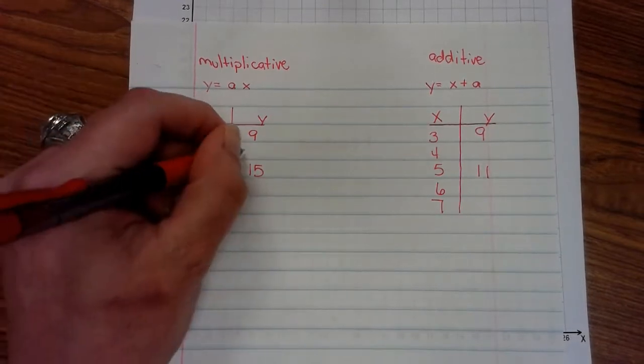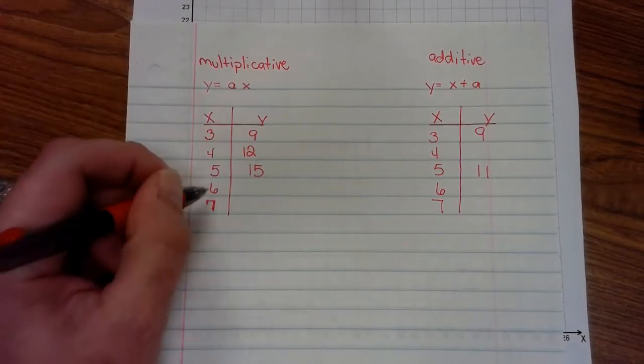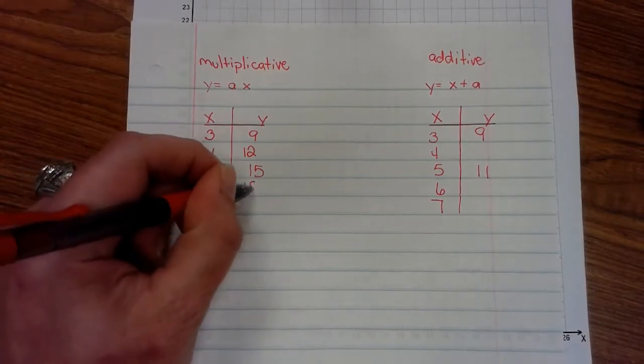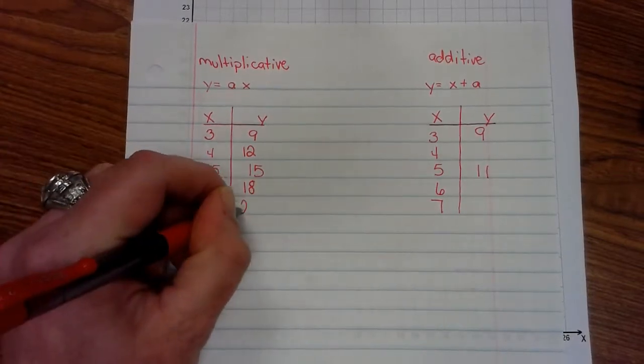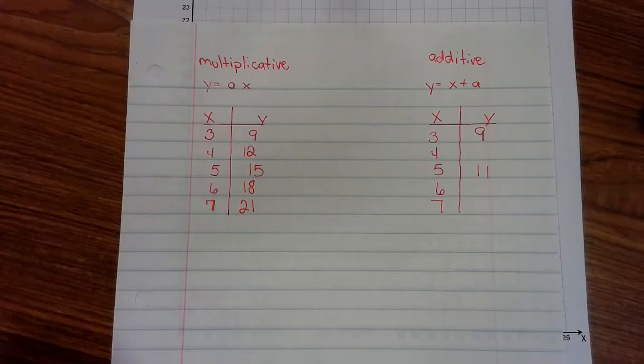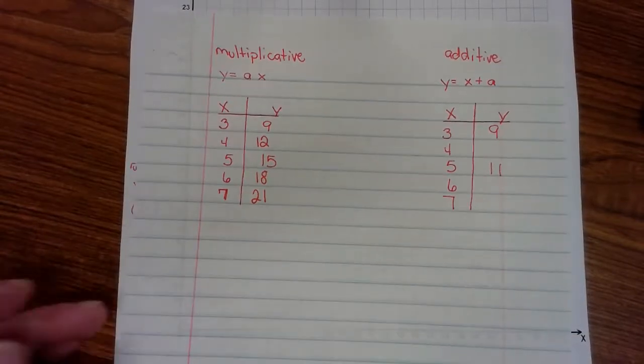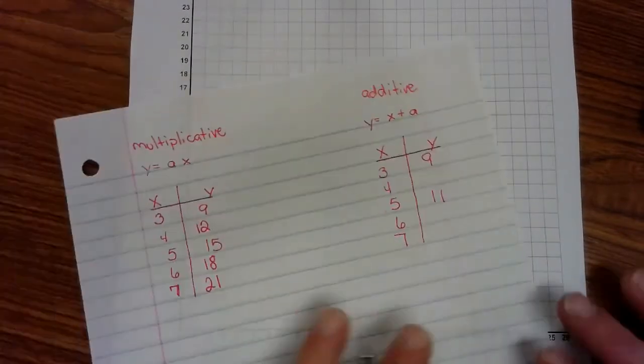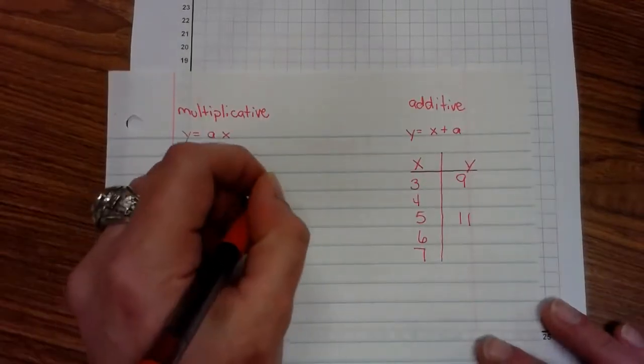4 times 3 is 12. 6 times 3 is 18. 7 times 3 is 21. Now I can take these numbers and I can put them in ordered pairs. 3 and 9.